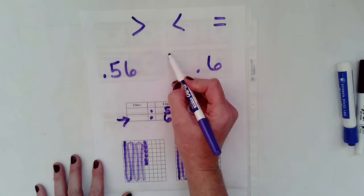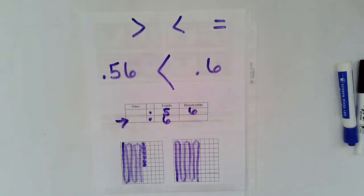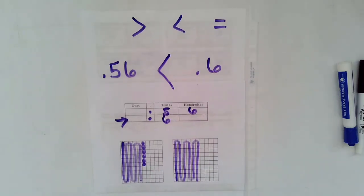So, 56 hundredths is less than 6 tenths. So, as you begin to compare decimals, think about using your place value chart and drawings to help you.